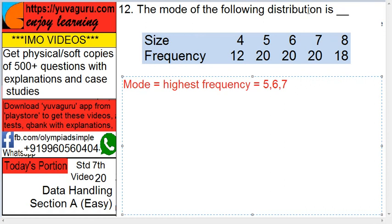Mode of the following distribution is — see here, this is size and this is frequency. Frequency means number of occurrences. Mode means which value has the highest frequency, or highest number of occurrences.